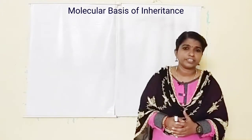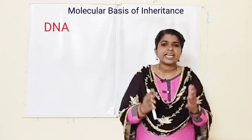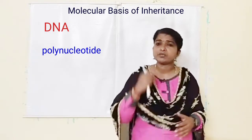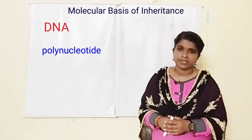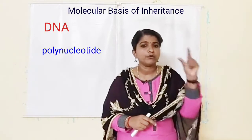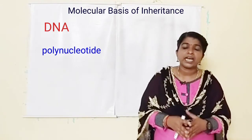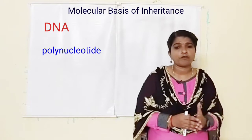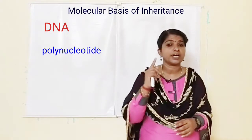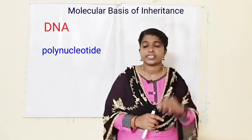First we can start with the structure of DNA. DNA is a polynucleotide chain — polynucleotide means many nucleotides are there. The length of DNA is determined by the number of nucleotides or the number of base pairs in it. For example, the haploid content of human DNA is 3.3 × 10⁹ base pairs. This is a characteristic feature of an organism.